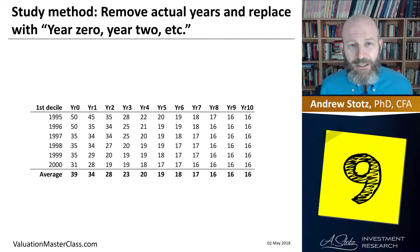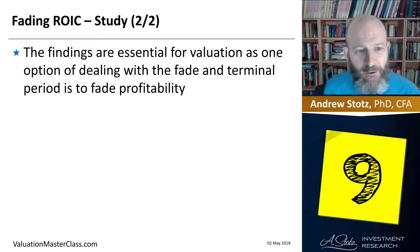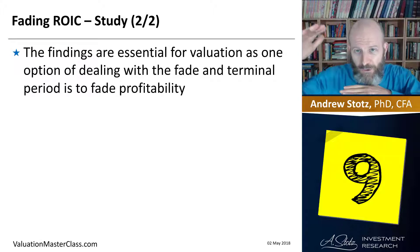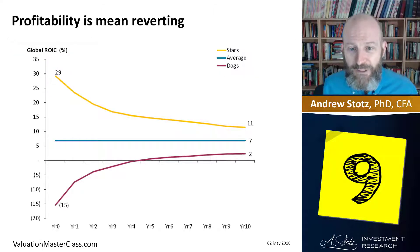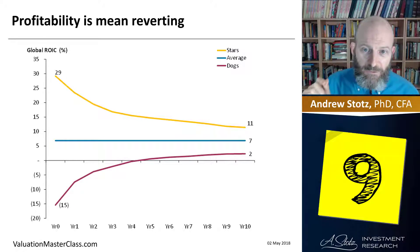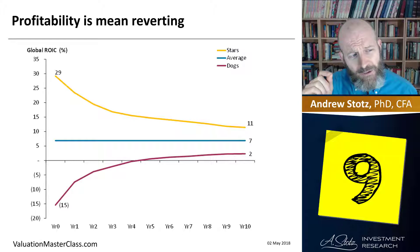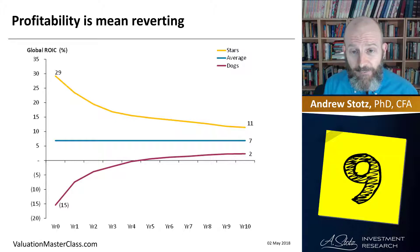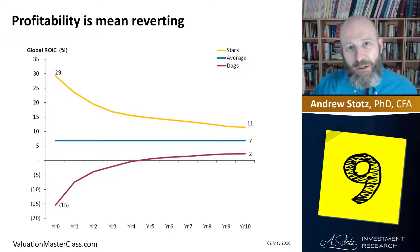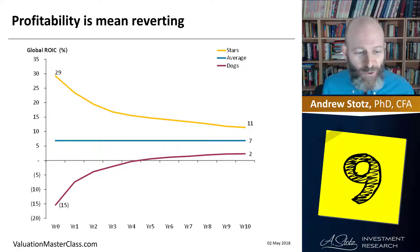We did the same thing for the tenth decile. The findings are essential for valuation: profitability is mean reverting. The highest group — the stars, decile one — has an ROIC of 29%, which fades down to 11%. The lowest have an ROIC of negative 15%, which fades up to 2%. Stars remain above the average and dogs remain below the average. So: once a star, always a star — but a star falls within three years.